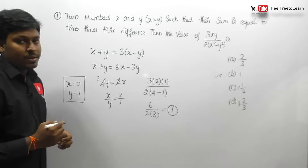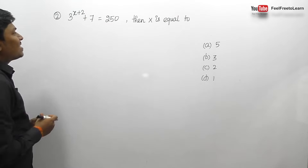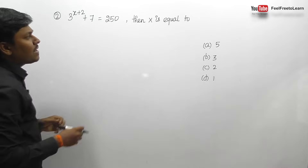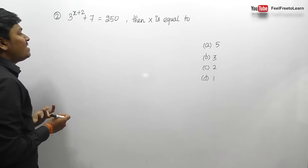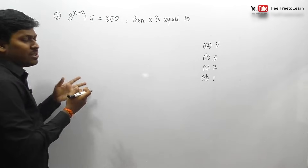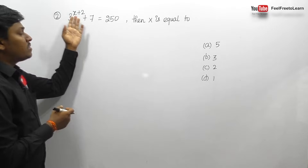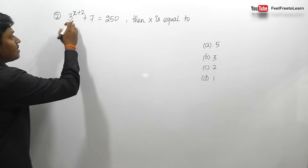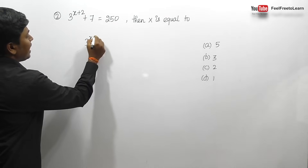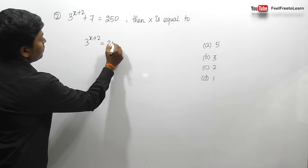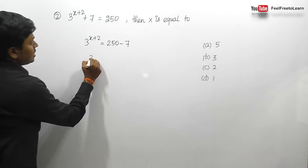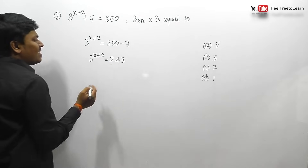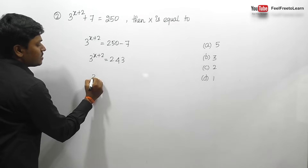Question number 2: 3 to the power (x+2) plus 7 equals 250. Find the value of x. This can be simplified as 3^(x+2) equals 250 minus 7, so 3^(x+2) equals 243.